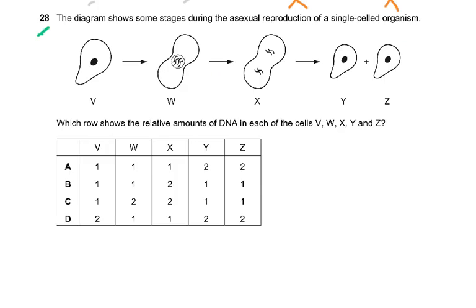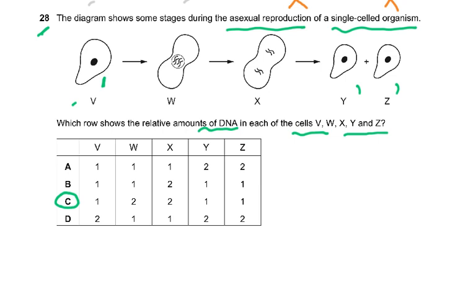Question number 28: The diagram shows some stages during the asexual reproduction of a single-celled organism. Which row shows the relative amounts of DNA in each of the cells V, W, X, Y, and Z? Y and Z should have the same DNA as V. They've given you 1 and 2 — if V is 1, then Y and Z should also be 1. That is only possible in C, so the answer to question 28 is C.